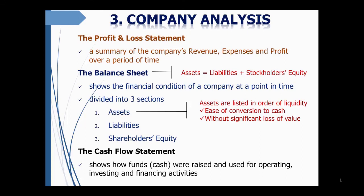Company analysis involves studying the financial statements of a company to learn how financial numbers are generated. The investor uses financial ratios to learn how the company is faring, as the financial statements reveal the hard facts about a company's operating performance and financial position. There are three parts to a company's financial statements: the income statement (profit and loss statement), the balance sheet, and the cash flow statement. These measure the company's revenue, expenses and profits over a period of time.